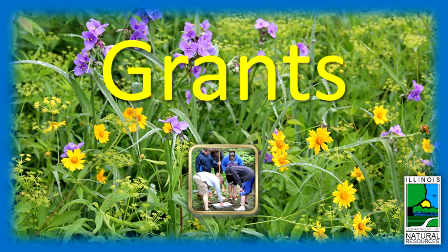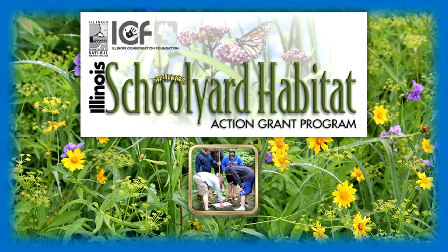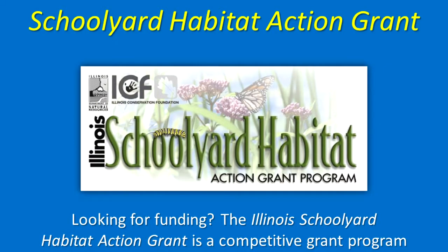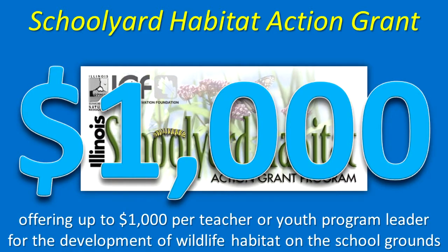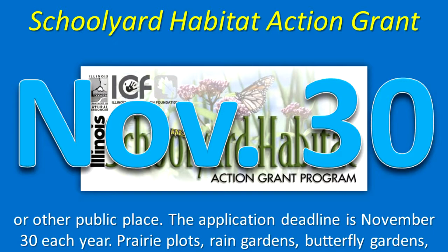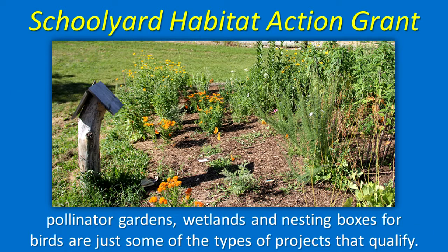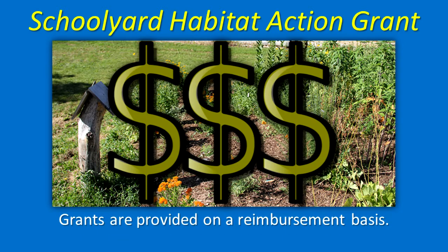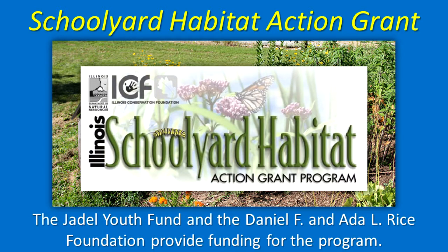Looking for funding? The Illinois Schoolyard Habitat Action Grant is a competitive grant program offering up to $1,000 per teacher or youth program leader for development of wildlife habitat on school grounds or other public place. The application deadline is November 30 each year. Prairie plots, rain gardens, butterfly gardens, pollinator gardens, wetlands, and nesting boxes for birds are just some of the types of projects that qualify. Grants are provided on a reimbursement basis. The Jadel Youth Fund and the Daniel F. and Ada O'Rice Foundation provide funding for the program.